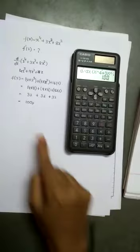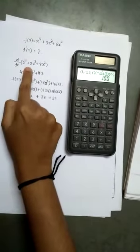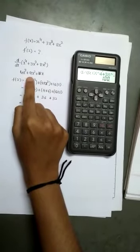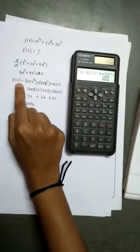You can do this manually. d by dx of x raise to 4 plus 3x cube plus 8x square is equal to 4x cube plus 9x square plus 16x. At x is equal to 2,